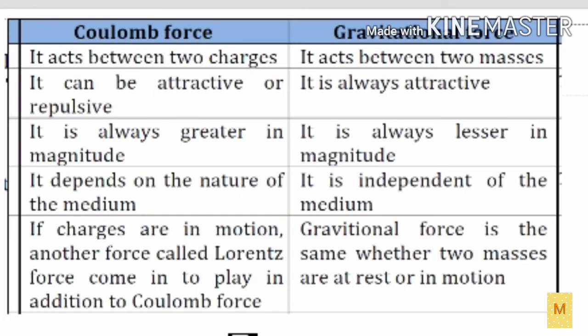Next one is the difference between the Coulomb force and the gravitational force. The Coulomb force acts between two point charges. The Coulomb force can be attractive or repulsive, but the gravitational force is always attractive. The Coulomb force is always greater in magnitude, but the gravitational force is always lesser in magnitude. The Coulomb force depends upon the nature of the medium, but the gravitational force is independent of the medium. If the charges are in motion, there will be another force called the Lorentz force which will act in addition to the Coulomb force, but the gravitational force is the same whether the two masses are at rest or in motion. This is a very important remark.